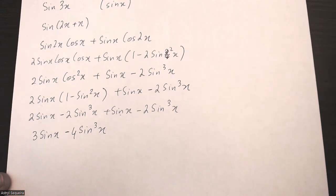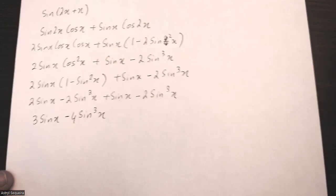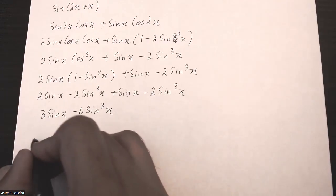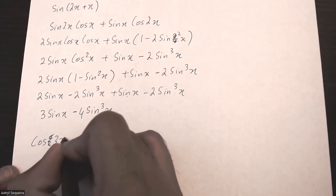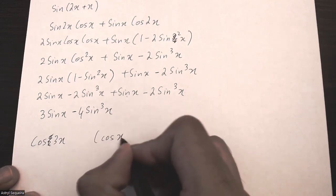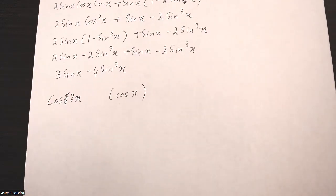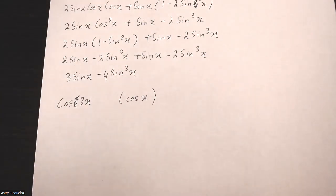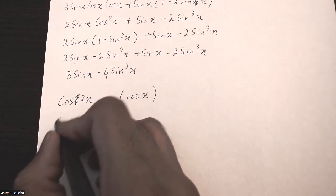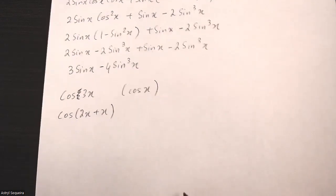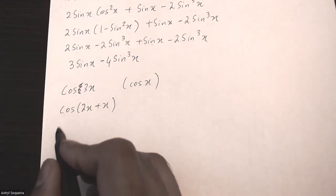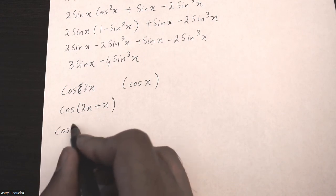Let's take a look at the second example. In the second example, we want to express cos 3x in terms of cos x. The steps are pretty similar. We're going to start by splitting this into cos of 2x plus x, then we can use our addition formula for cos.